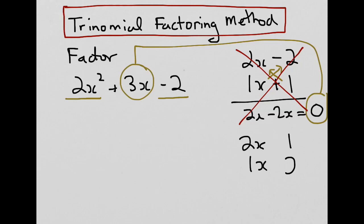And what about the last term? Well, in this case, we'll go 1 and 2, minus and plus. We'll cross multiply. Let's see what happens.